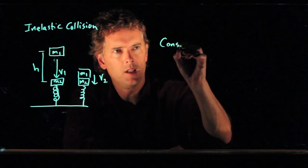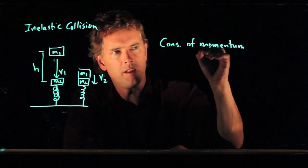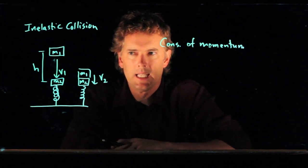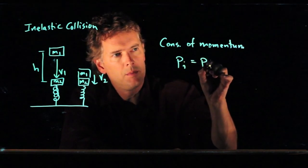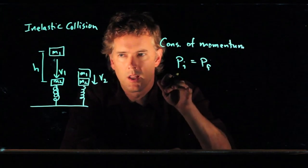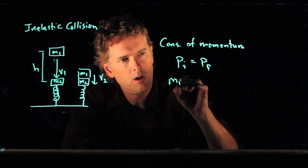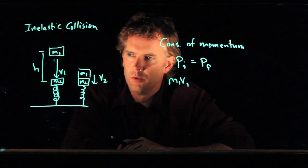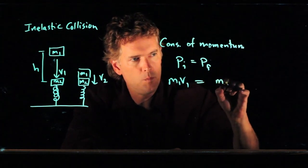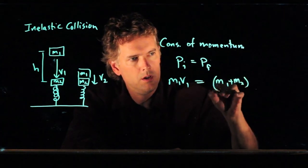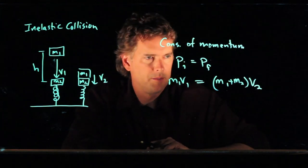So what happens in that collision is things get deformed, they stick together, it's completely inelastic. So momentum initially has to be equal to momentum finally, where initially we mean just before the collision, and finally we mean just after the collision. So it's M1 V1 initially. Afterwards, it is M1 and M2 moving together at speed V2.